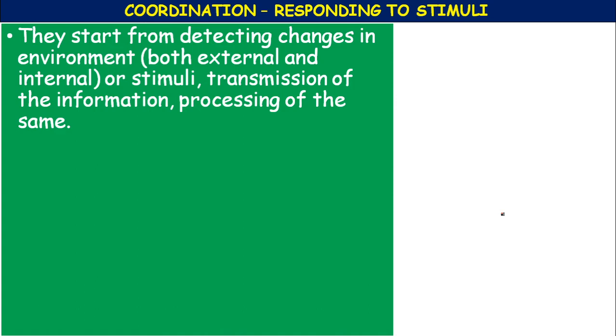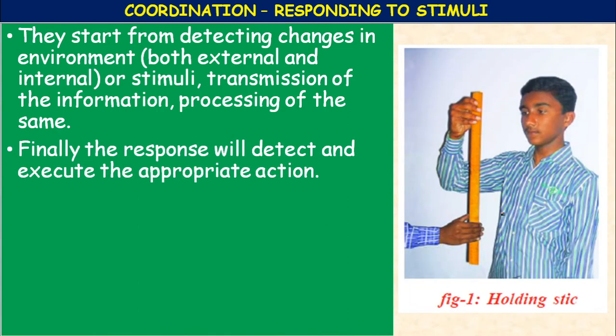In order to survive, organisms must adjust to their environment. There is a sequence of events that brings about responses to stimuli: first, detecting changes in both external and internal environments; then transmission and processing of the information; and finally, executing the appropriate action.